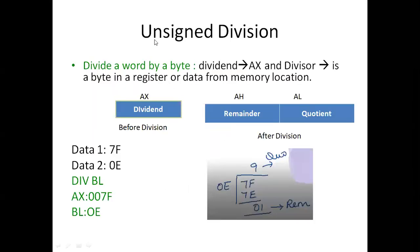In case of a 16 by 8 bit division, the dividend is in AX and the divisor is a byte in the register or from the location. Before the execution of DIV, AX will have the dividend. After the execution, the quotient will be in AL and the remainder will be in AH. Let us take an example. We have two operands, data1 = 7FH and data2 = 0EH. We are going to execute DIV BL.